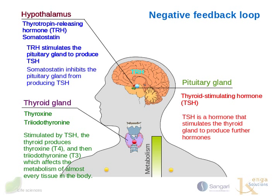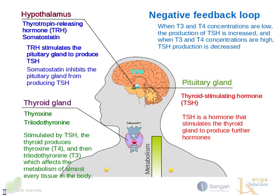We must also note that there is a negative feedback loop here, in that when T3 and T4 concentrations are low, the production of TSH is increased, and when T3 and T4 concentrations are high, TSH production is decreased.